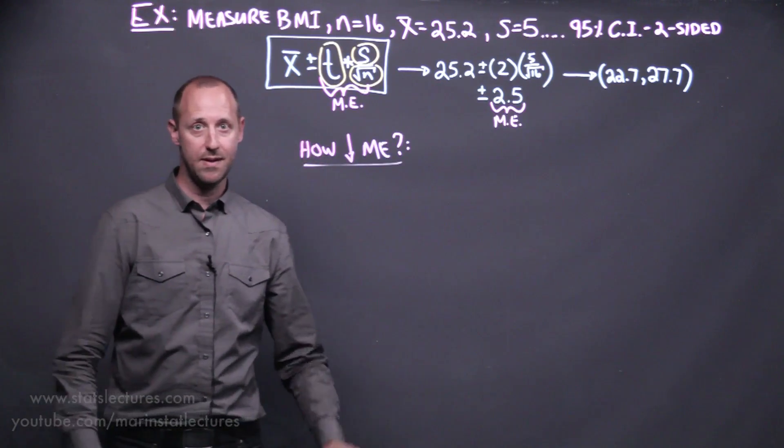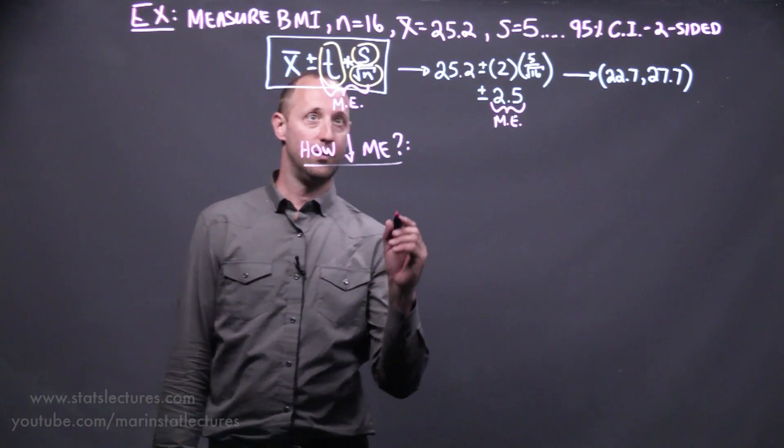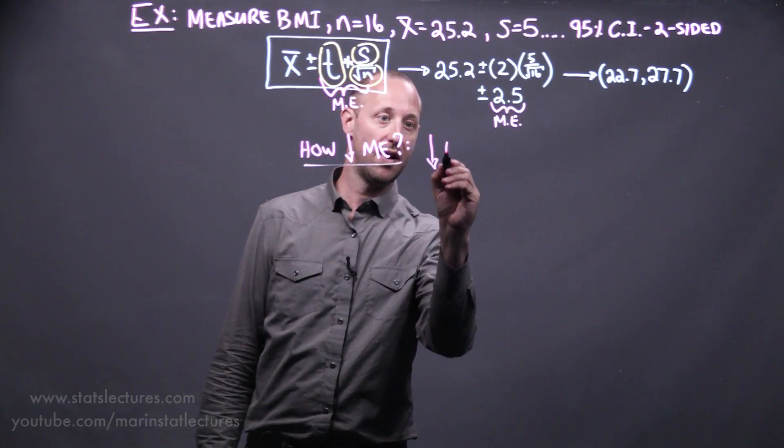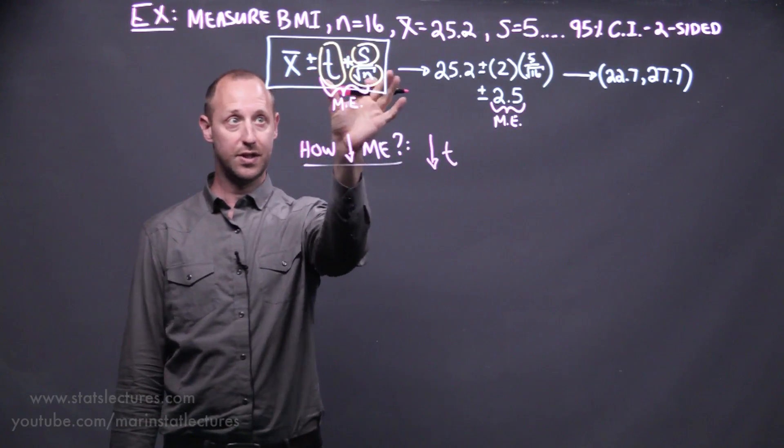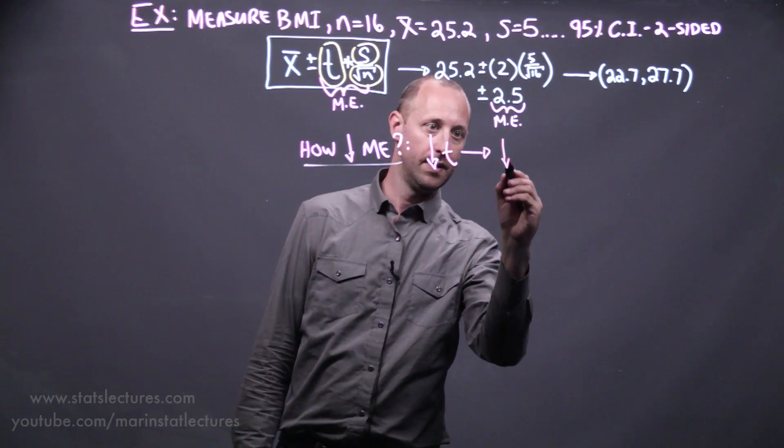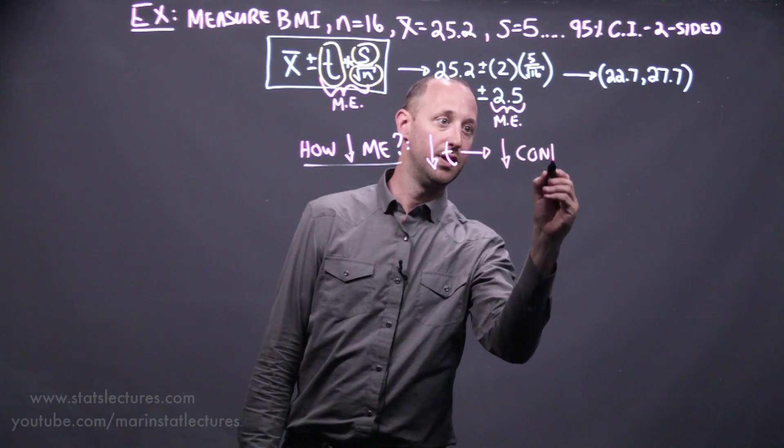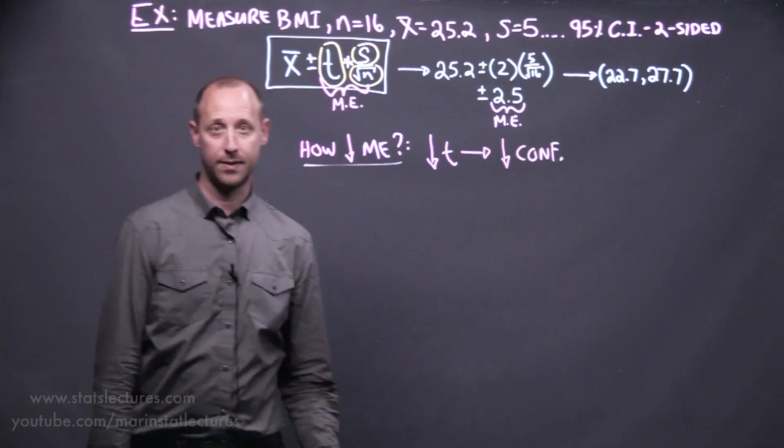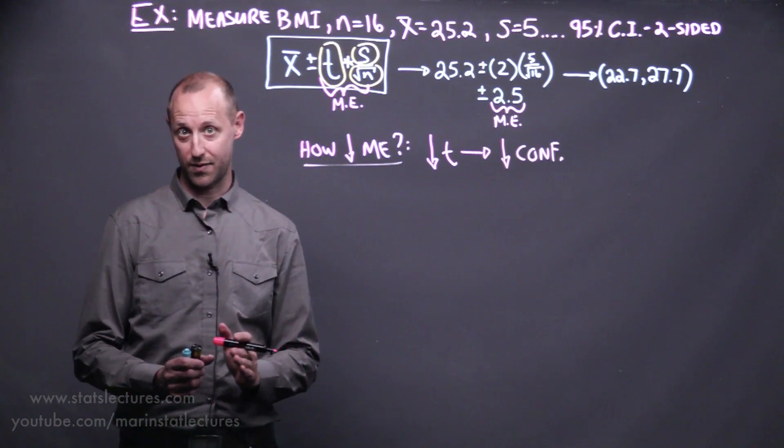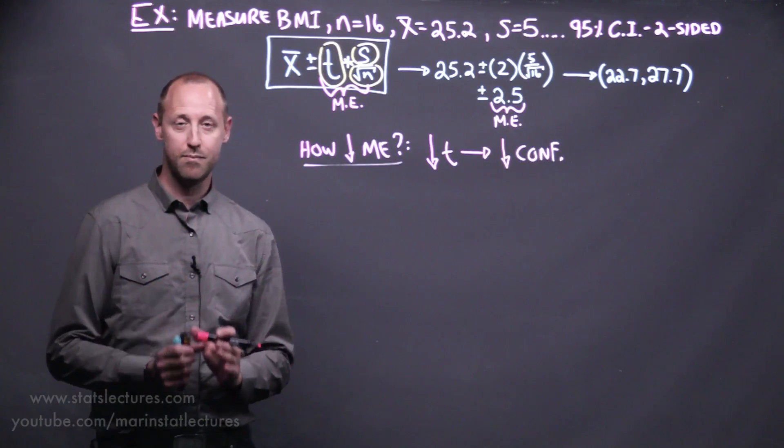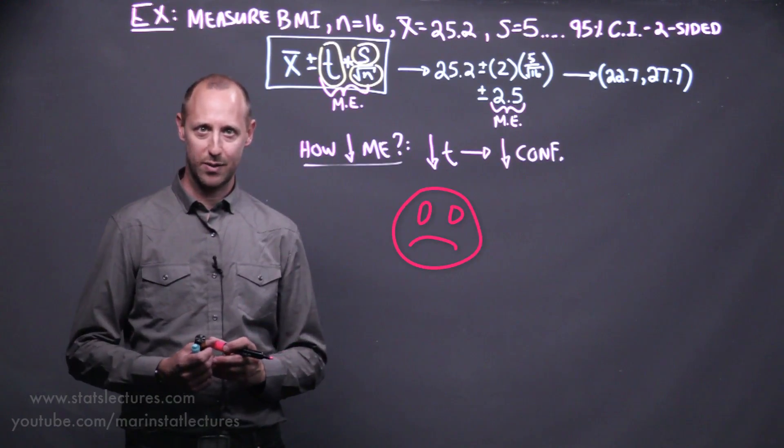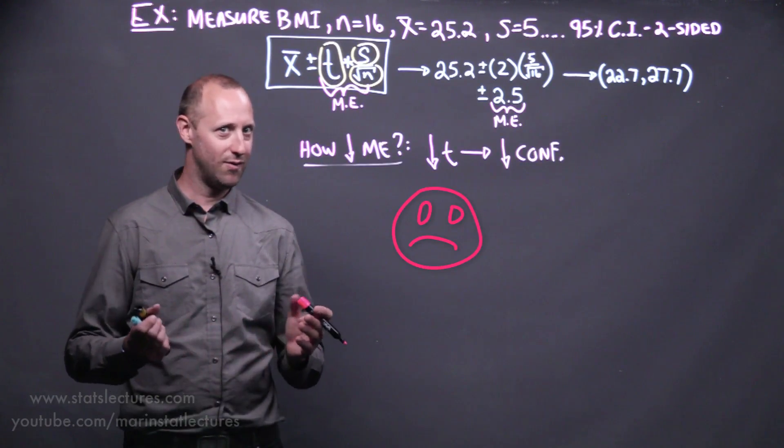So let's think through all of these theoretically. In order to decrease the margin of error we can decrease the t-value that we're using. A smaller t-value is going to mean a smaller margin of error. But what does that mean in reality? This is equivalent to decreasing our confidence. So rather than having 95% confidence we can go down to say 60% confidence. That's going to make our interval narrower but we're going to be only 60% confident that it contains a true value. And that's not really going to be useful if we have an interval that we're not very confident in.